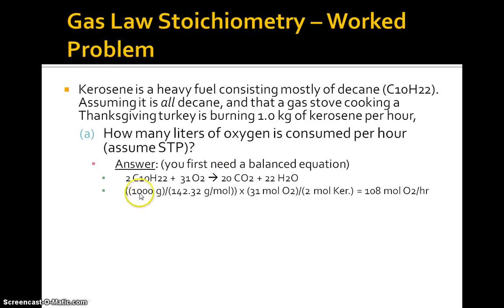So one kilogram of kerosene is 1,000 grams. Now, if you work out the molar mass of C10H22, you'll get 142.32 grams per mole. So here is the molar mass of the kerosene being burned. And we multiply that by the stoichiometric ratio between oxygen and kerosene, 31 to 2. And we actually get 108 moles of oxygen is consumed every hour. That's a lot of oxygen.